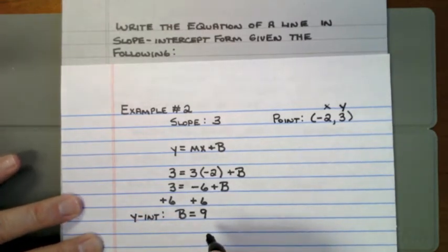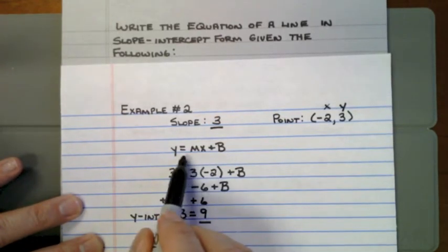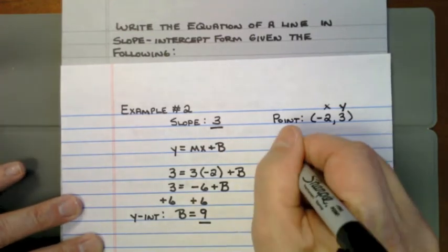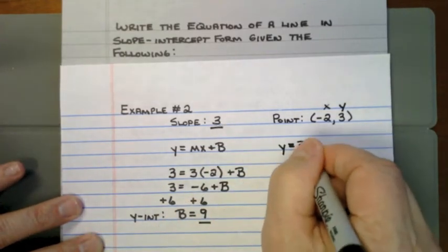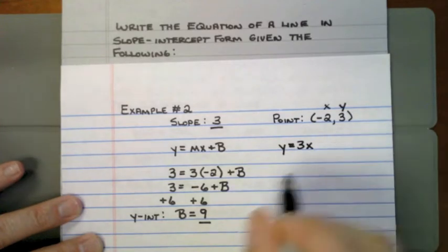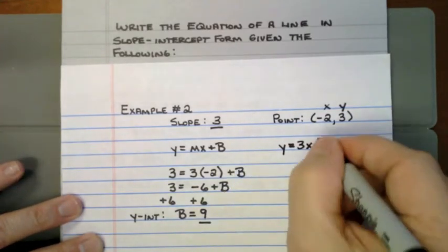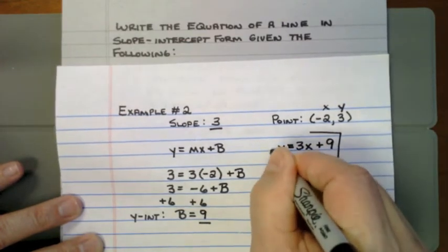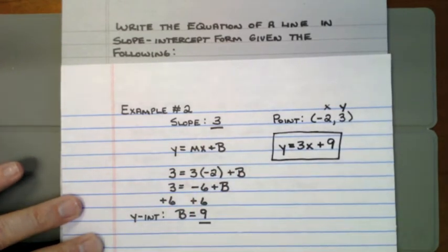I've got the two pieces of information I need to write the equation of a line — a y-intercept and a slope. I simply put those two things in the formula. The equation starts with y is equal to, slope is 3, with an x beside it, and on the end is the y-intercept: plus 9. This is the equation of the line that goes through that point and has that slope.